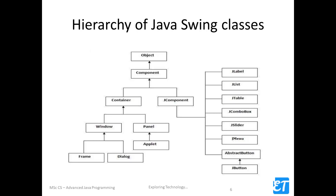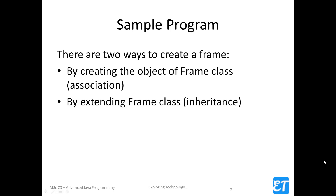This is the hierarchy of Java Swing classes. Now we are going to see a sample program. In the first example, we will handle mouse events and keyboard events and create a frame. We have a frame window open — you click a button to interact with it.